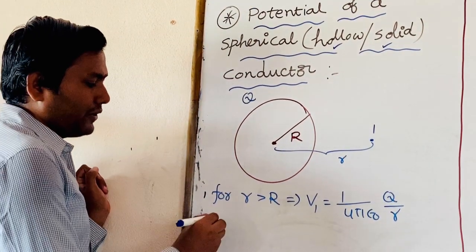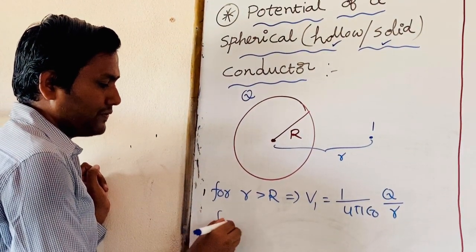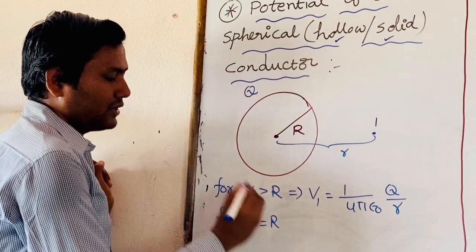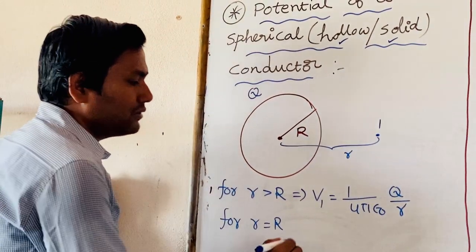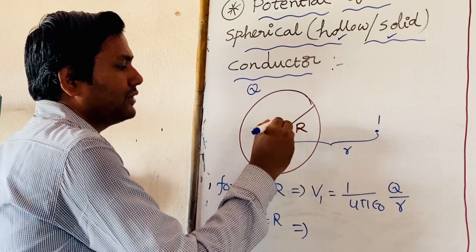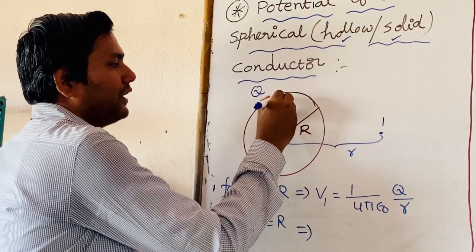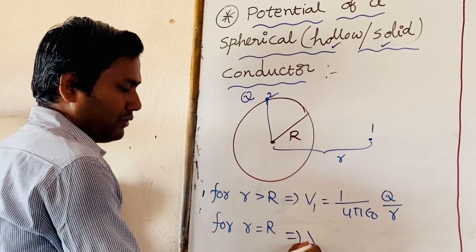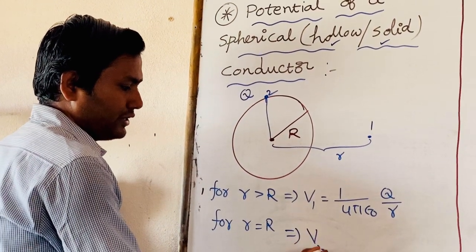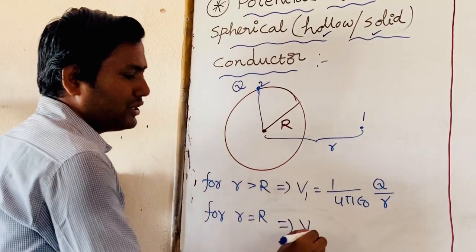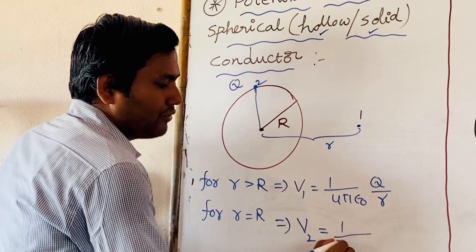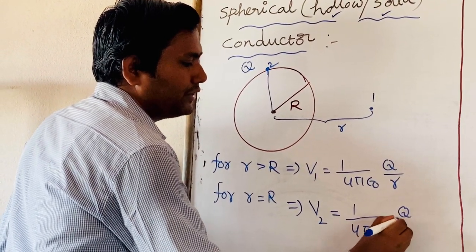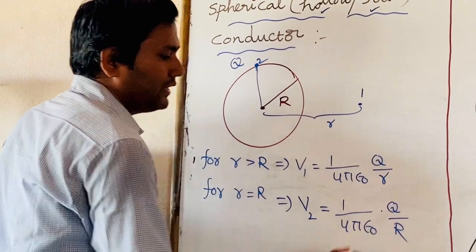Suppose you are taking the points for r equal to R — that is, taking the point of calculation on the surface, say this is point 2. The potential at point 2 is equal to (1/4πε₀) × (Q/R).